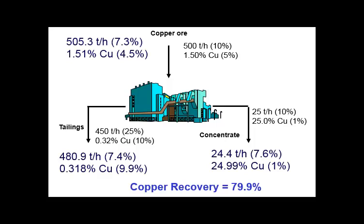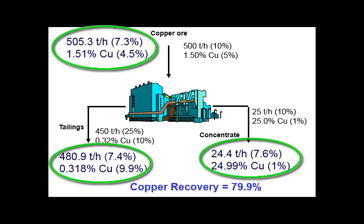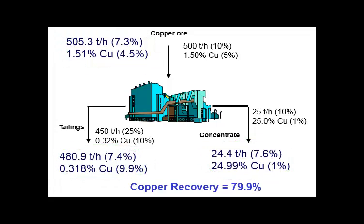The solution is to resort to data reconciliation, which enables obtaining coherent material balance data using all the available experimental data. A set of coherent data is calculated. The estimated values are not the real ones but the most probable ones. The level of confidence relative to the estimated values has improved due to the redundancy of the data and the very good accuracy of the copper content of the concentrate. The copper recovery of the concentrate is 79.9%.